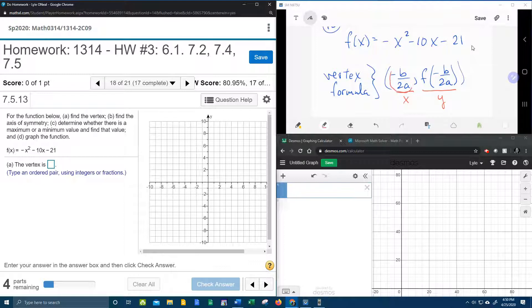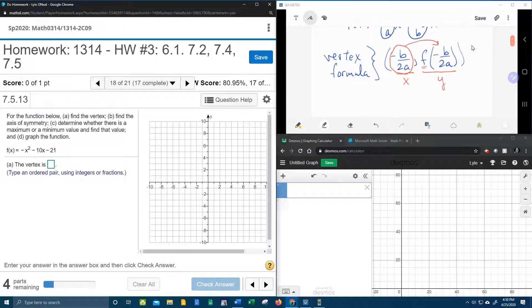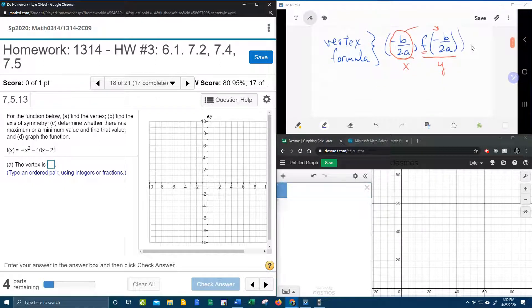So if I know what x is, look at this, it says I'm going to plug that in to the function to get my y value. So to do this, we have to know the value for a and b. So a is negative 1, b is negative 10, and so that should allow me to get the x coordinate of the vertex.